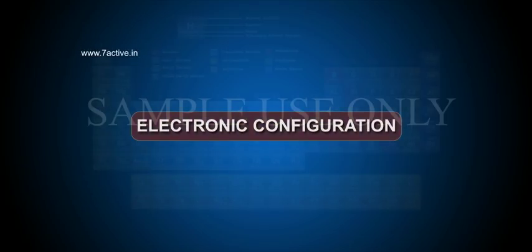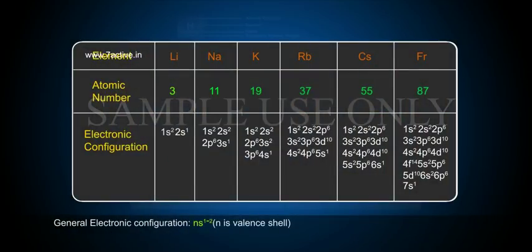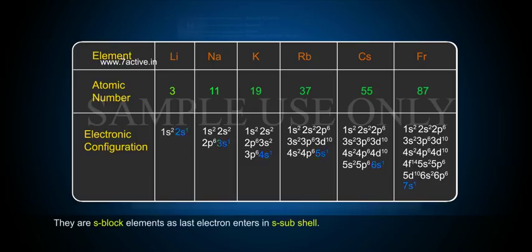Electronic configuration. General electronic configuration: N, S1. N is valence shell. They are S block elements as last electron enters in S subshell.